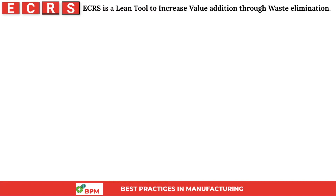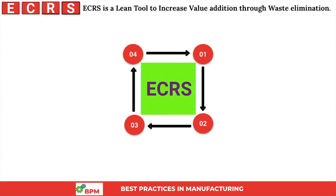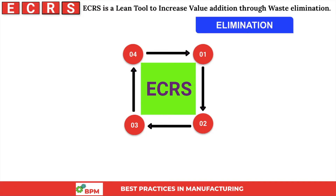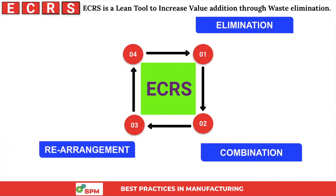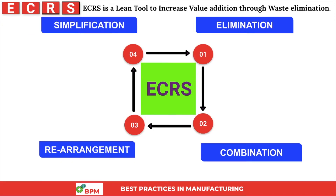Now we will understand ECRS and see in which flow we can implement it. E stands for Elimination, C means Combination, R means Rearrangement, and the last one, S, means Simplification. ECRS is a lean tool that we implement sequence-wise in the process flow.